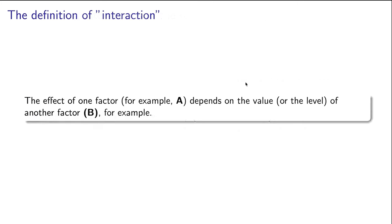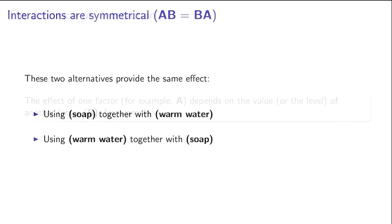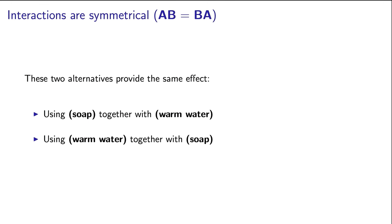All that interaction means is the effect of one factor depends on the level of the other factor. In this example, the effect of soap is different depending on whether we're using cold water or hot water. Interactions are also symmetrical. The soap's effect is enhanced by warm water. Also, the warm water's effect is enhanced by soap. So symmetry means that if soap interacts with water temperature, then we know the water temperature factor interacts with the soap factor.